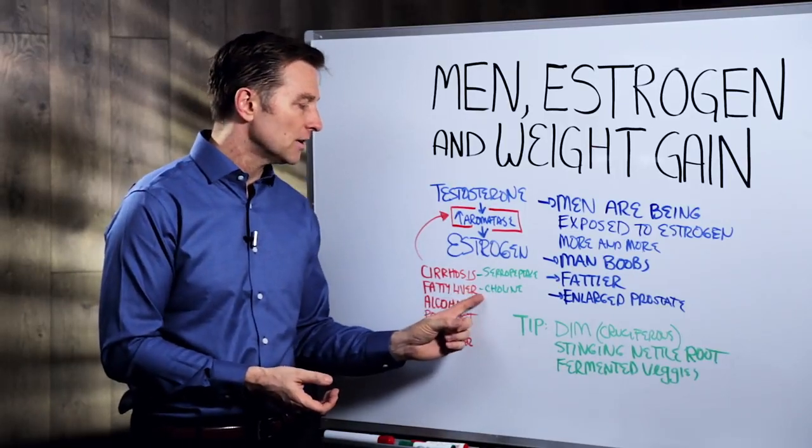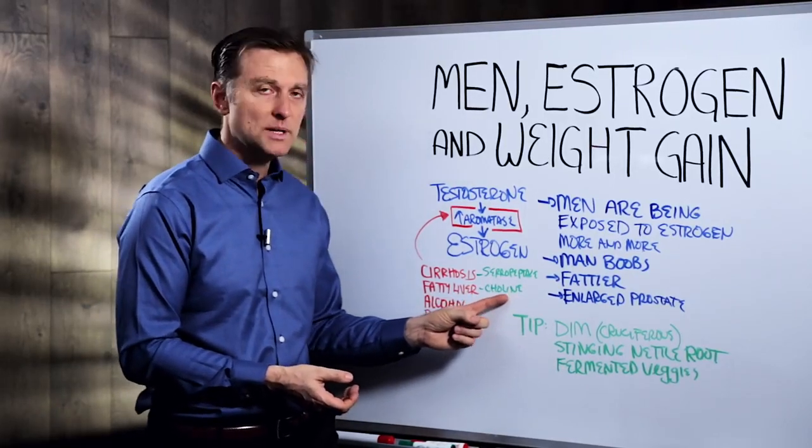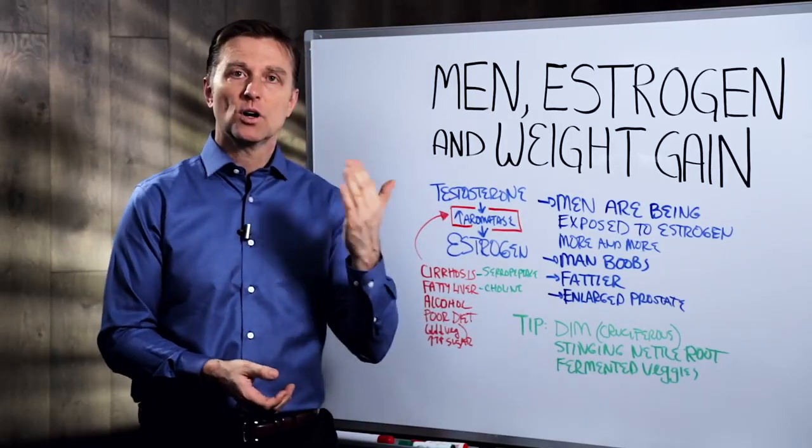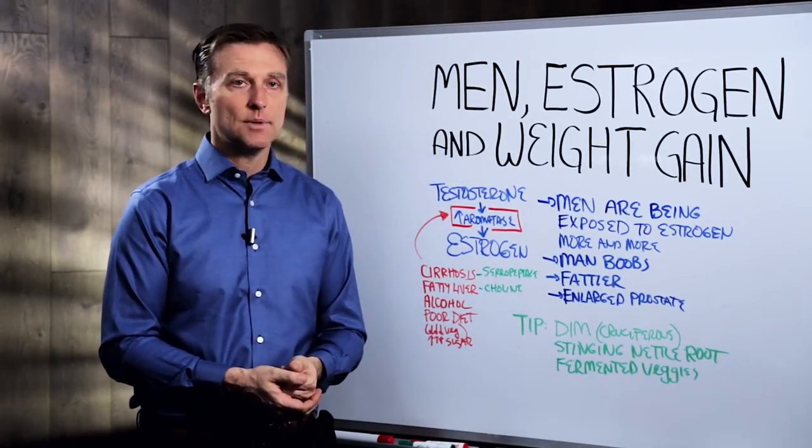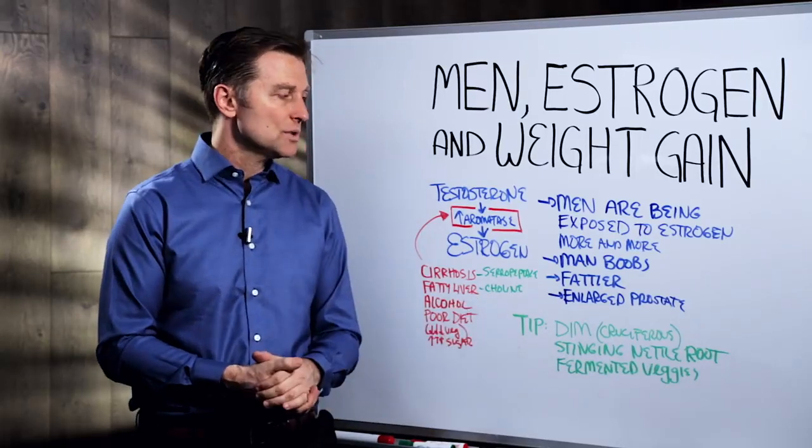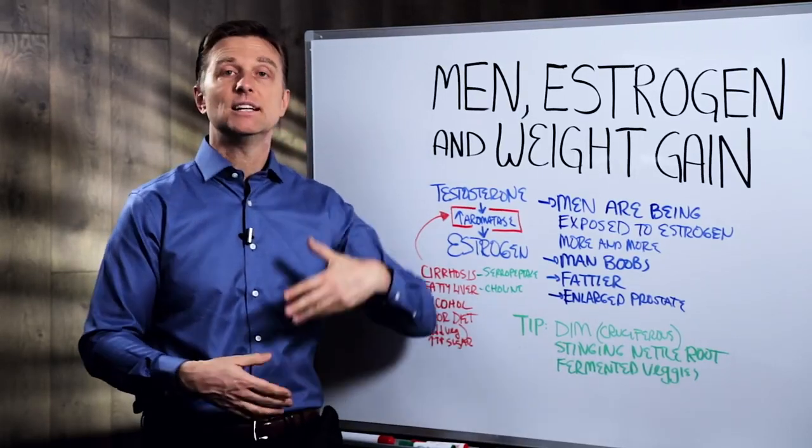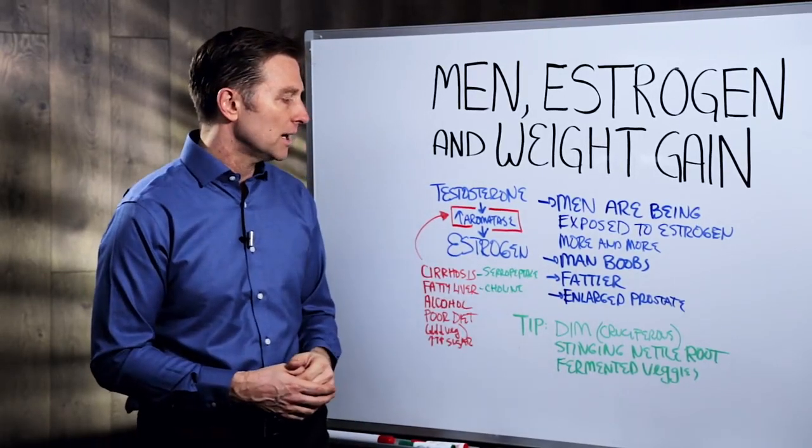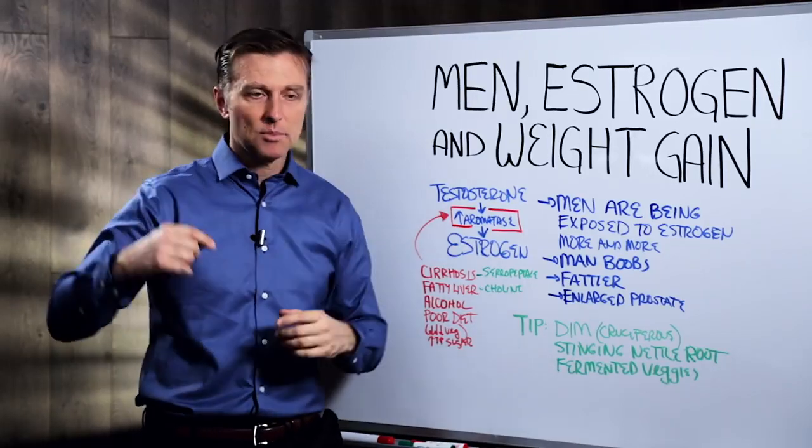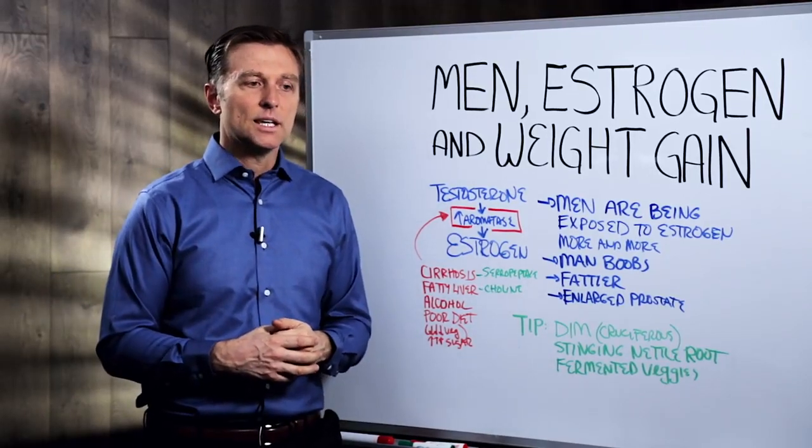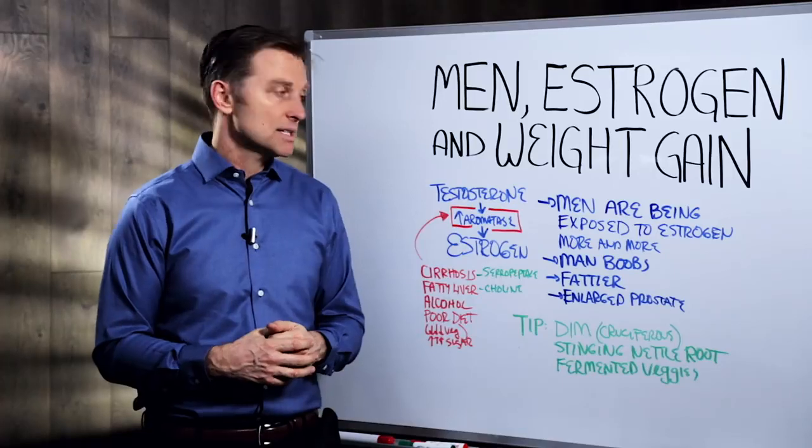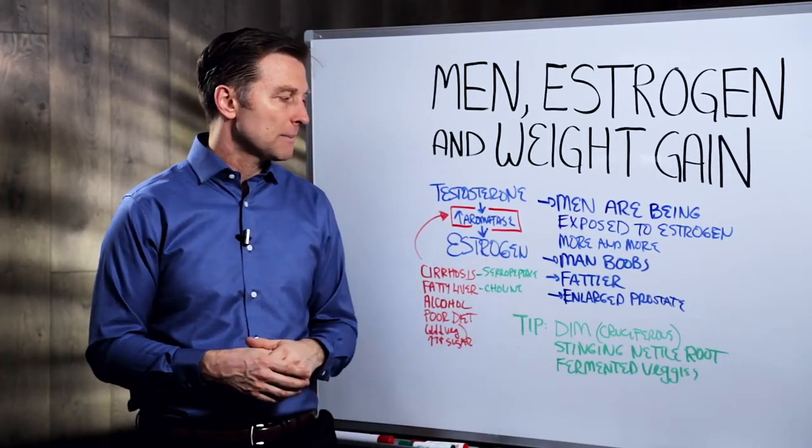Now, if you have a fatty liver, choline is your mineral. You need to start consuming more choline. It's a fat-soluble, lipotrophic vitamin, B vitamin, that will help reduce fat and liver. Of course, that's in addition to lowering insulin, which I put a link down below, which you really want to correct something called insulin resistance because that's really what's making the liver fatty.